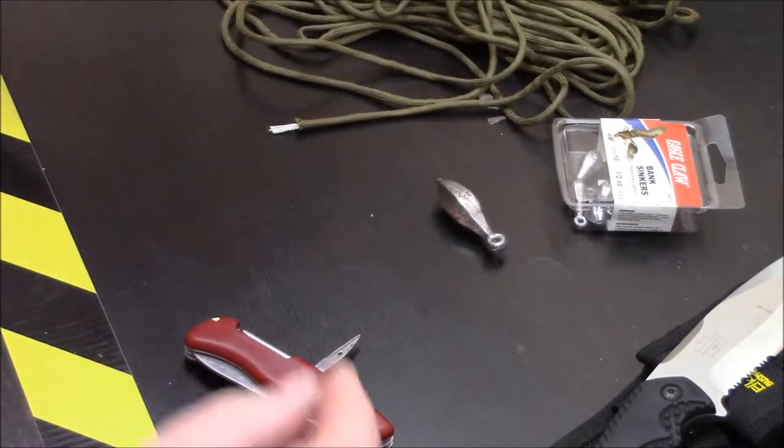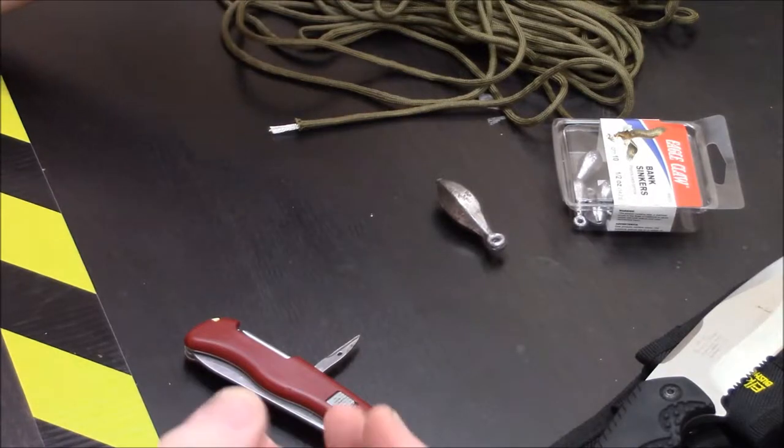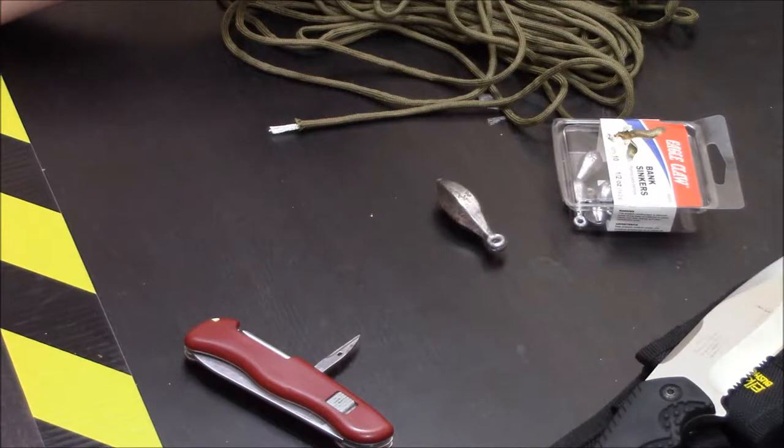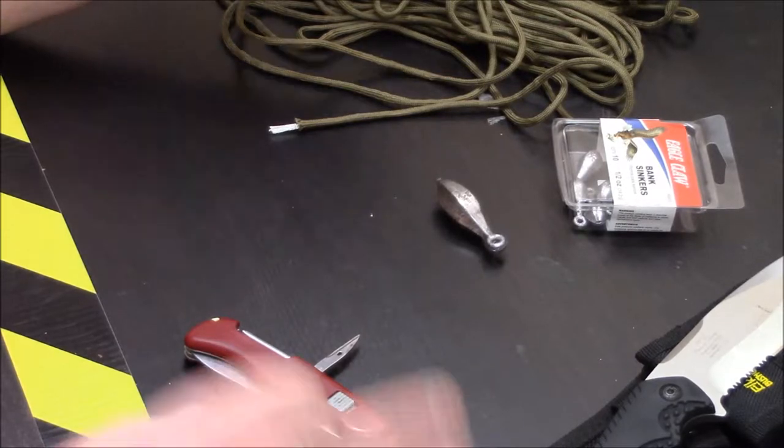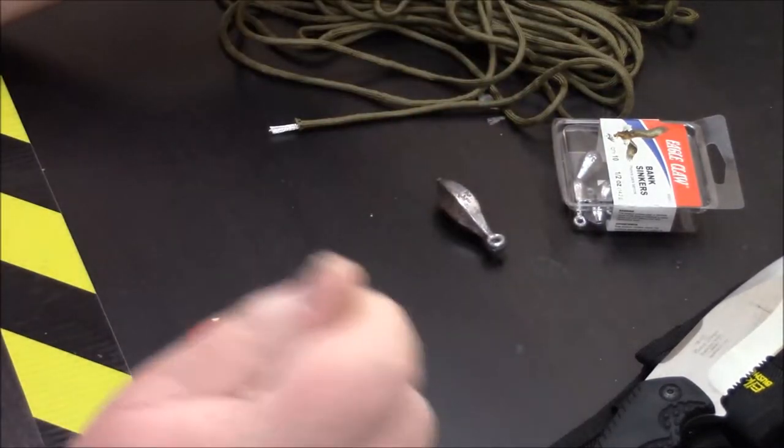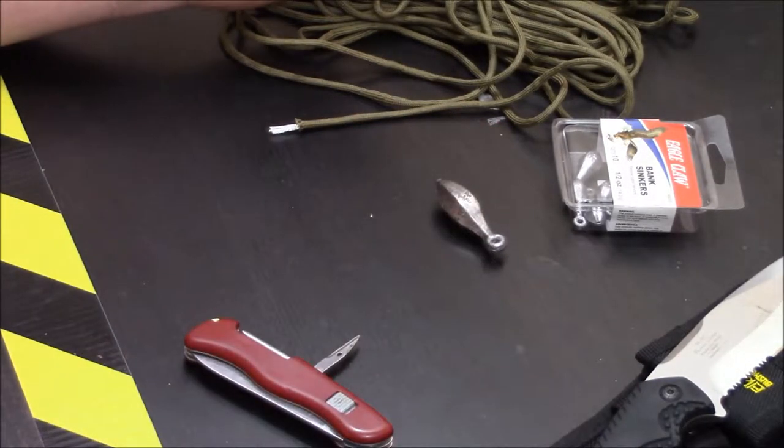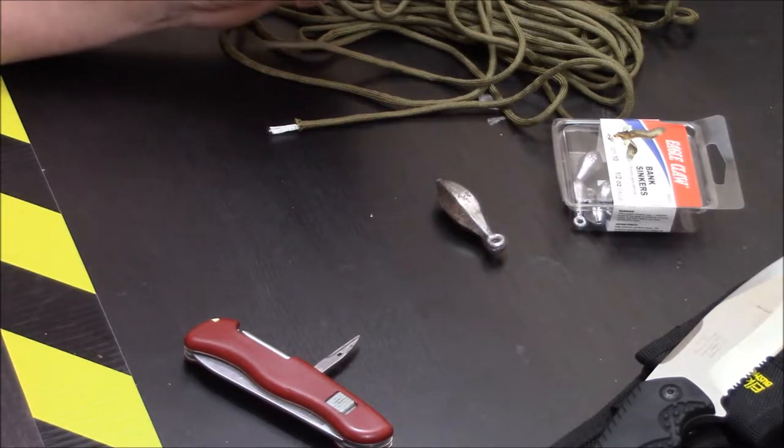And bolas are basically three, sometimes more, weighted balls on the end of a length of rawhide. Approximately two, two and a half feet long usually, but could be longer. Which they would spin and throw to snag an animal around its feet. Catch the legs, bring it down. Nifty thing.